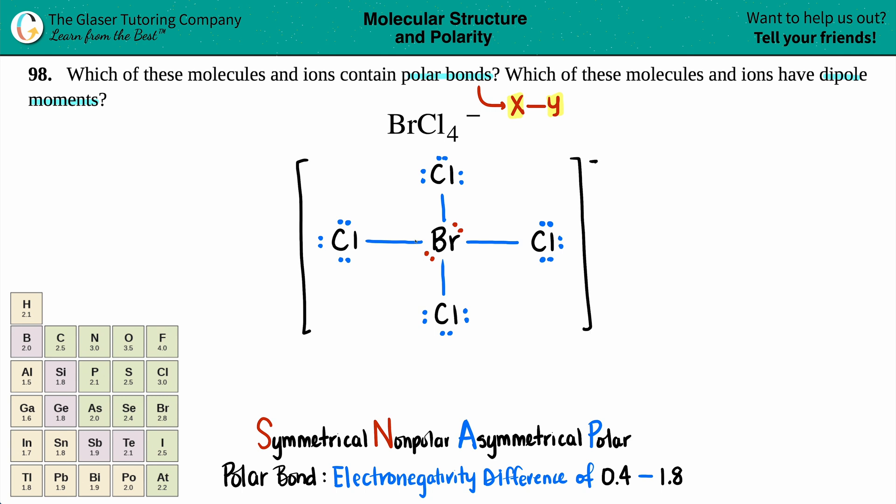Now we have the full Lewis structure and can clearly see the bonds. They're all equivalent—it's a chlorine bound to a bromine no matter which connection you're looking at.